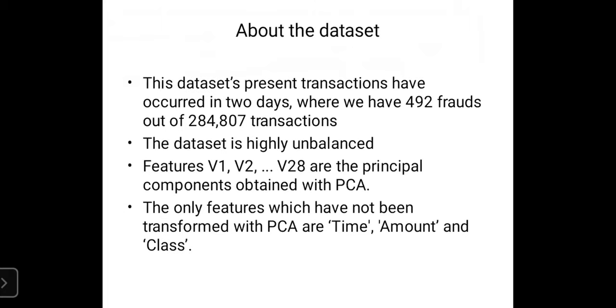About the dataset, we have taken a dataset from dataworld.com, based on two days, where we have 492 frauds out of 284,807 transactions. It is very highly imbalanced. After the principal components obtained with PCA, features V1, V2 to V28, the only features which have not been transformed are time, amount, and class. Now I want to hand over to Kaisa Vidar.